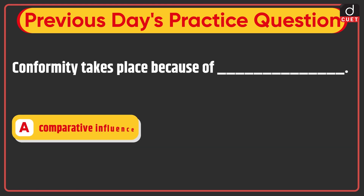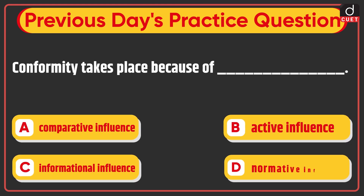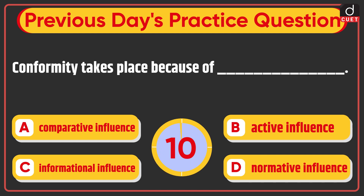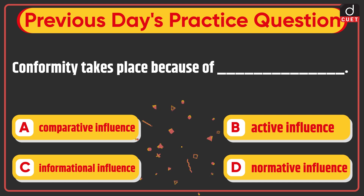The question was: Conformity takes place because of — Comparative influence, Active influence, Informational influence, or Normative influence? The correct answer is Option C, Informational influence.